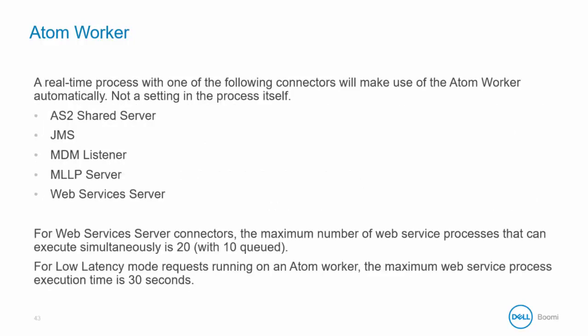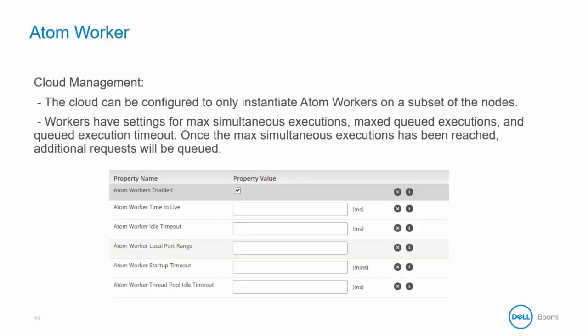A real-time process using any of the listed connectors uses the atom worker automatically. There are a few limits to be aware of. For web services server connectors, the maximum number of web service processes that can execute simultaneously is 20. For low latency mode requests running on an atom worker, the maximum web service process execution time is 30 seconds. Workers have settings for max simultaneous executions, max queued executions, and queued execution timeout. Once the maximum simultaneous executions has been reached, additional requests will be queued.